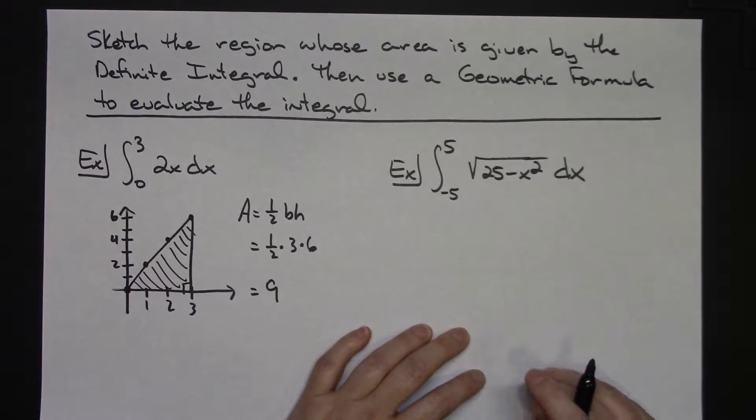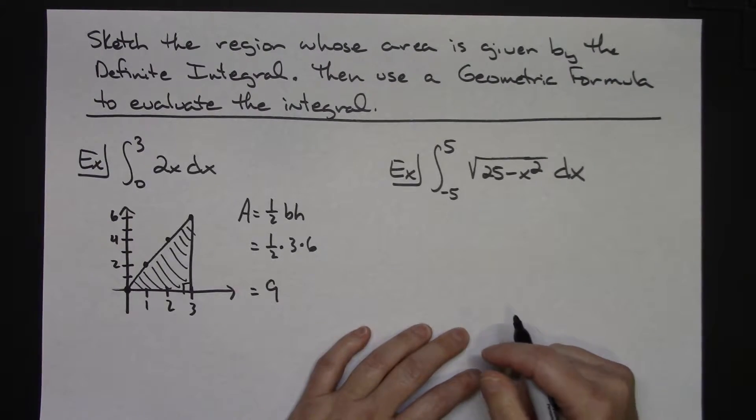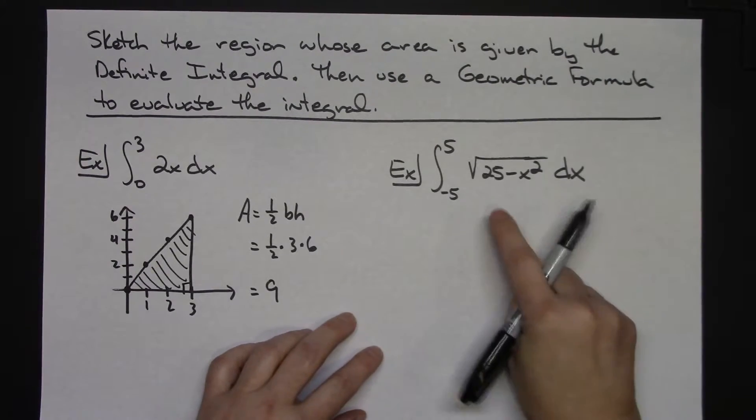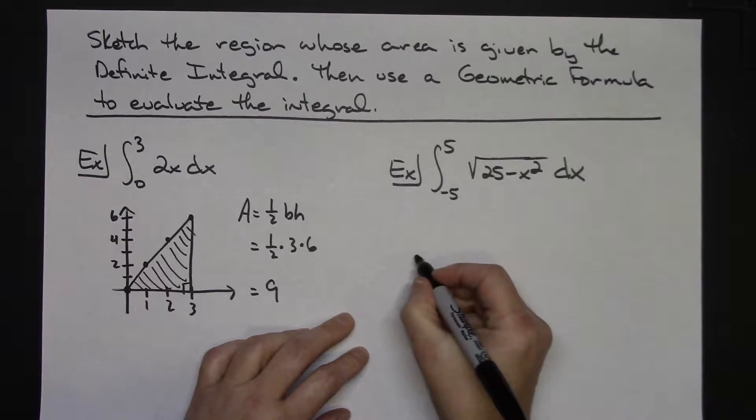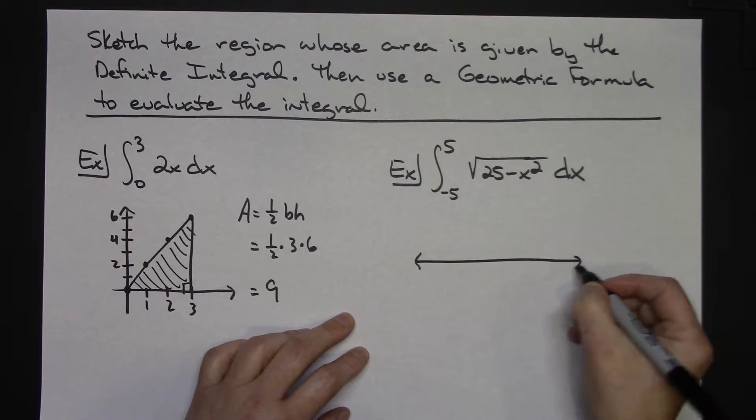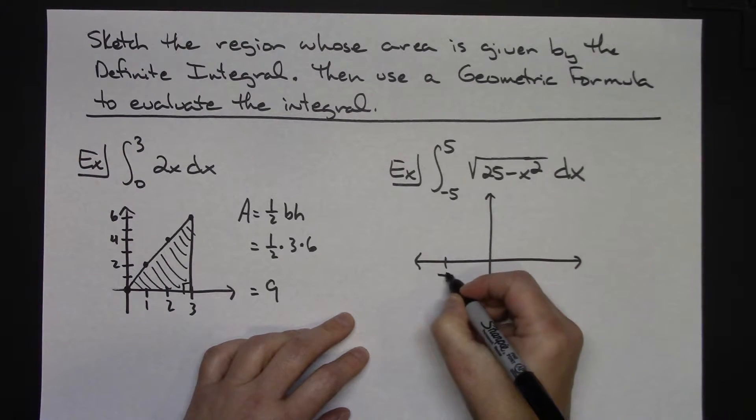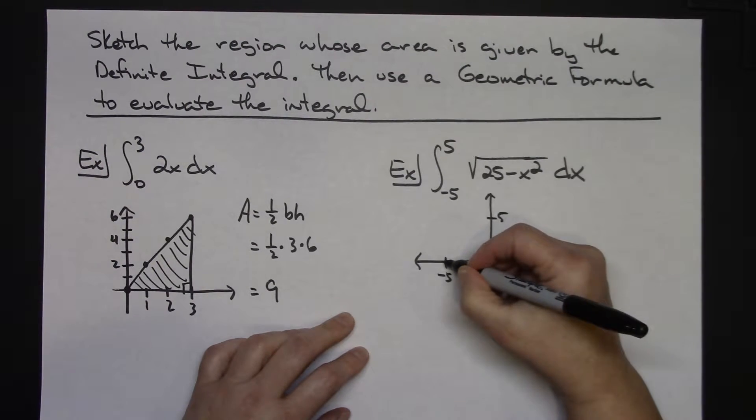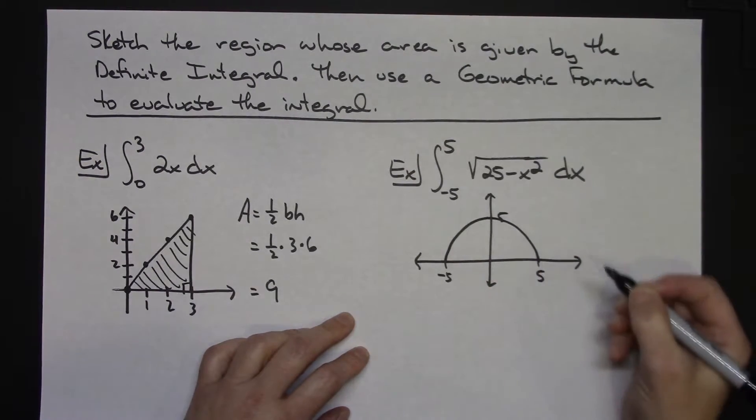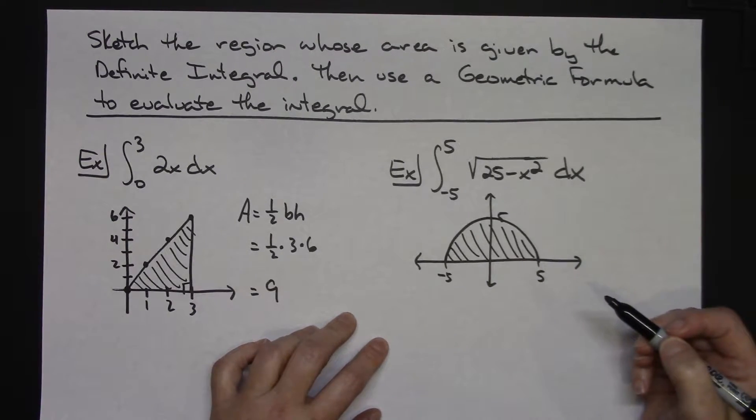On this one, hopefully you would recognize that that is a semi-circle. If not, you could probably use a graphing calculator, put it in there, get the general idea. This will be a semi-circle with a radius of 5. So if I'm going to do a rough sketch, let's go over and make our radius negative 5, 5, 5. So somewhat of a semi-circle there. Shaded region right in there.